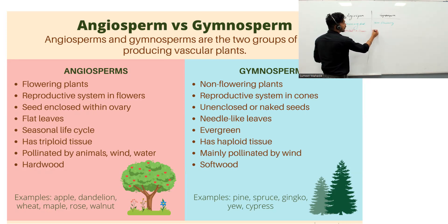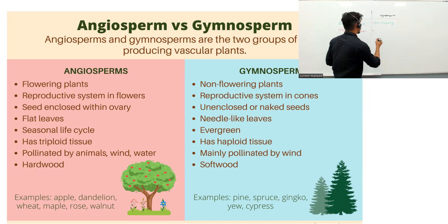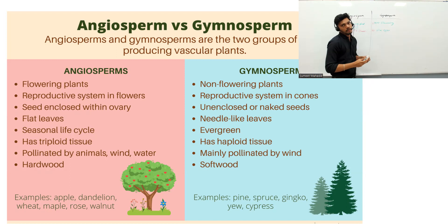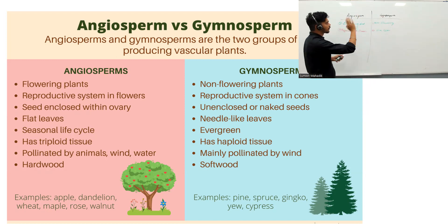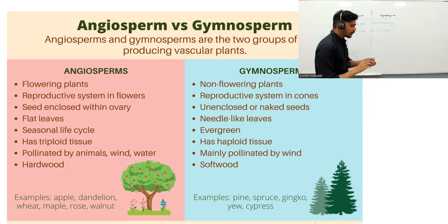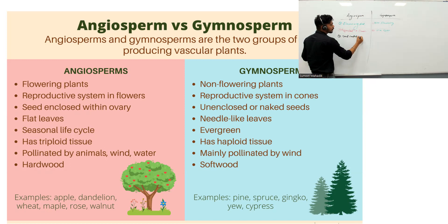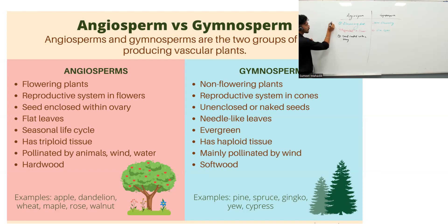In gymnosperms, since there are no flowers, reproduction is done via cones. Now, regarding seeds: in angiosperms, seeds are enclosed within the ovary. If we consider a flowering plant, this ovary, once fertilized, will contain the seed coated inside the ovary.